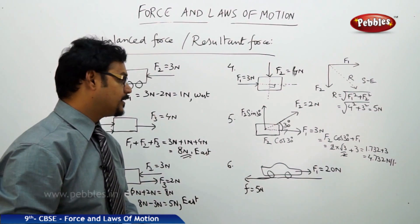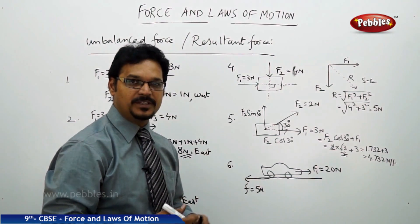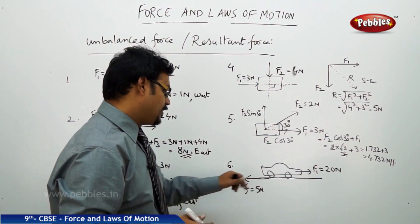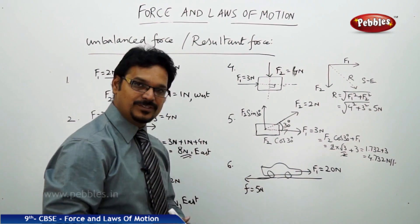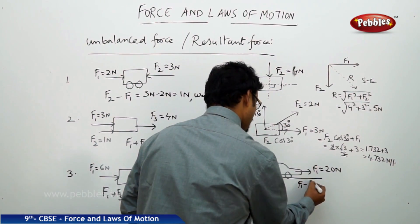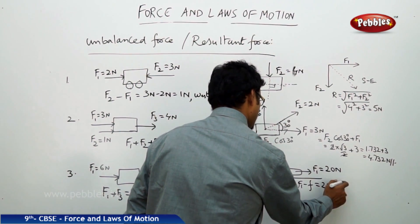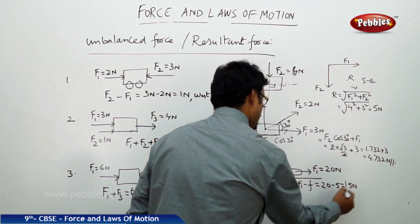See the last one, again a simpler problem. You have a realistic problem. A car is moving with the force of 20 newtons because of engine and it is suffering with a frictional force of 5 newtons. So what is the resultant force? Resultant force is F1 minus F, 20 minus 5, this is 15 newtons towards east.